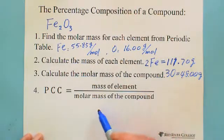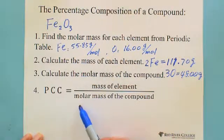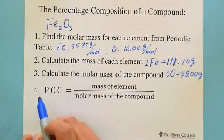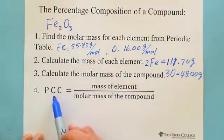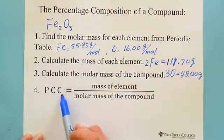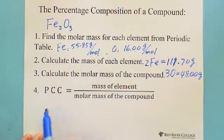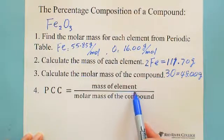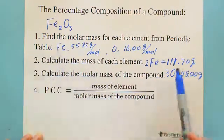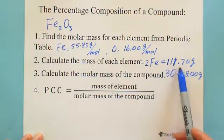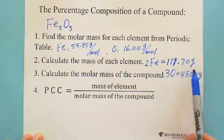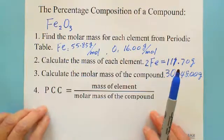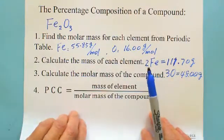Then we can calculate the percentage composition of the compound. In the formula, P is percentage, C is composition, and the last C is compound. We use the mass of each element divided by the molar mass of the compound. So for iron, it is 111.70 divided by the total molar mass. Let's do this on the next page with a table, which is clearer.